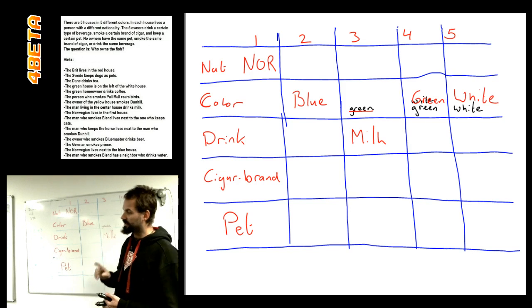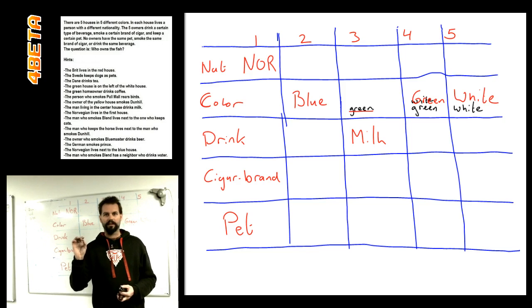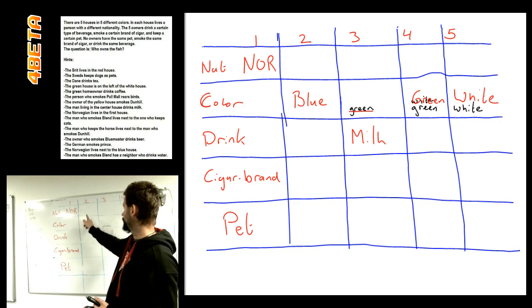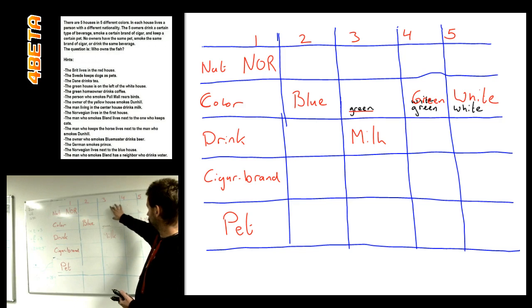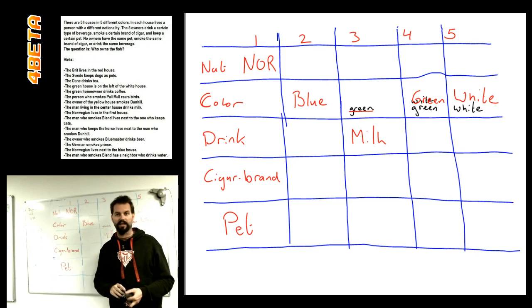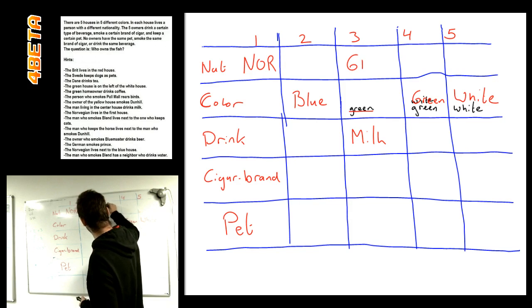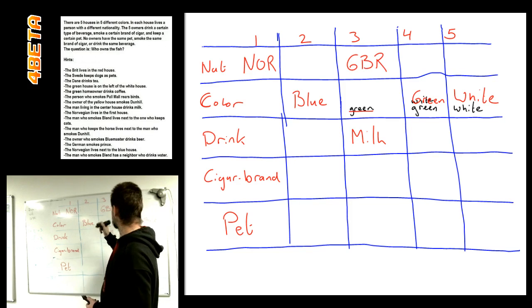So, the next rule that we are going to use is the rule that the Brit lives in the red house. So, house number one is a Norwegian guy living. House number two is blue. House number three is an option. Four and five also already have colors assigned, so they don't count anymore. So, we have the British guy from Great Britain living in the red house.